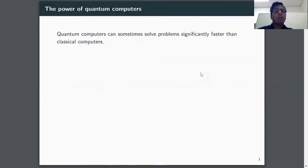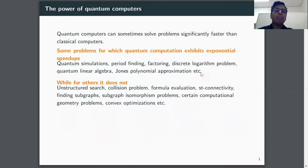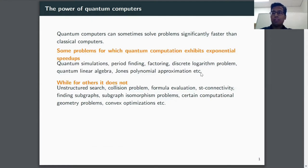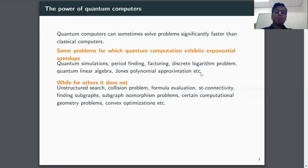In this work we want to understand the power of quantum computers. We know that quantum computers can sometimes solve some problems significantly faster than classical computers. For instance, for problems like period finding, factoring, and discrete log problems, quantum computers can actually be exponentially faster than classical computers, whereas for some other problems like unstructured search, collision problems, and formula evaluation, quantum computers can only be polynomially faster. So the question is: what makes these problems different? Why for some problems do we have exponentially faster quantum algorithms, whereas for others it is only polynomially faster?